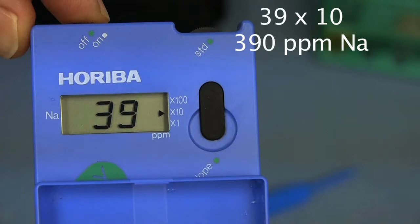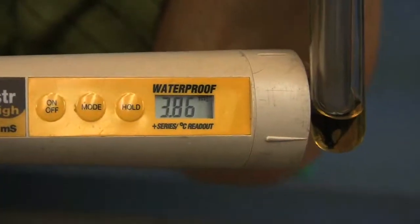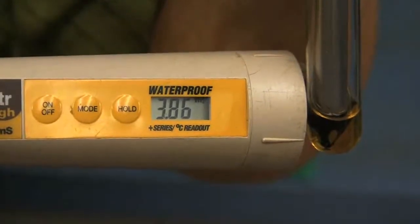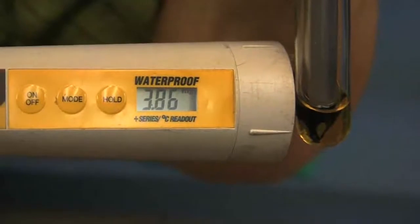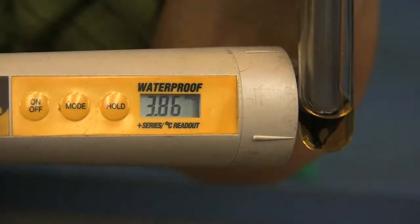Now let's take a look at the salinity of that saturated paste extract using the FieldScout EC meter. So when we stick the EC meter probe into the solution we see that we get a direct reading of 3.86 ds per meter and this is a solution so you don't need to convert that meter reading.